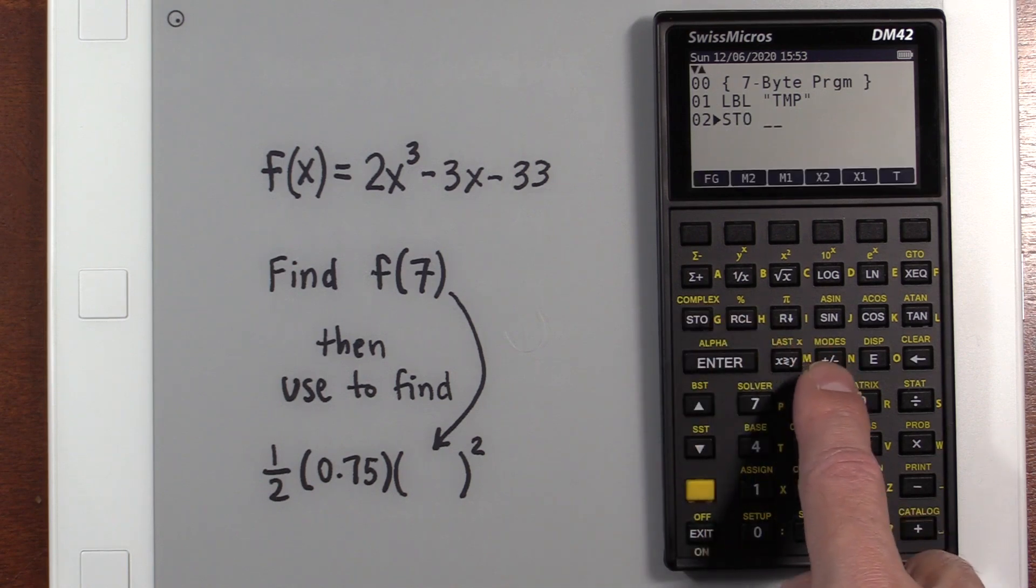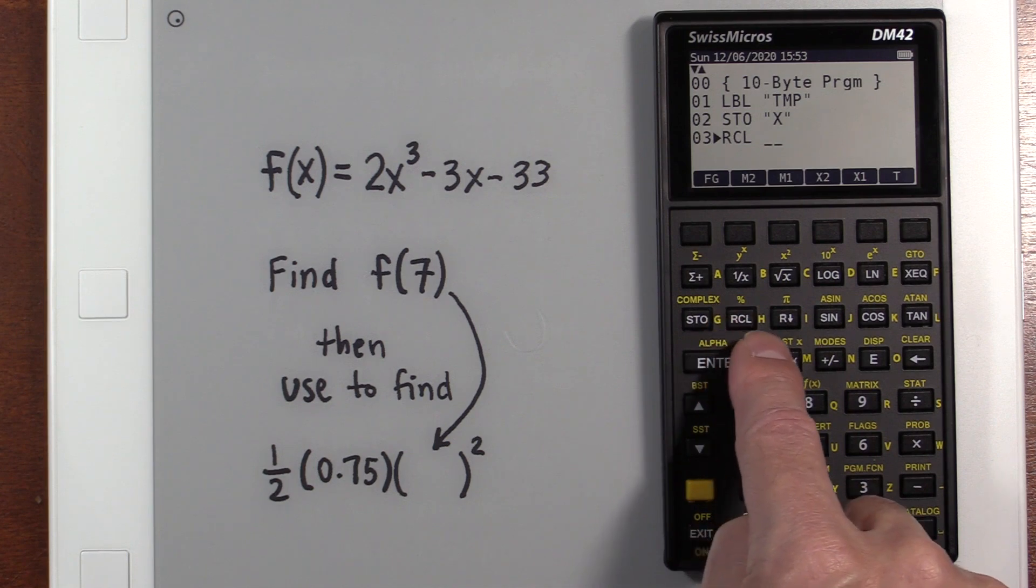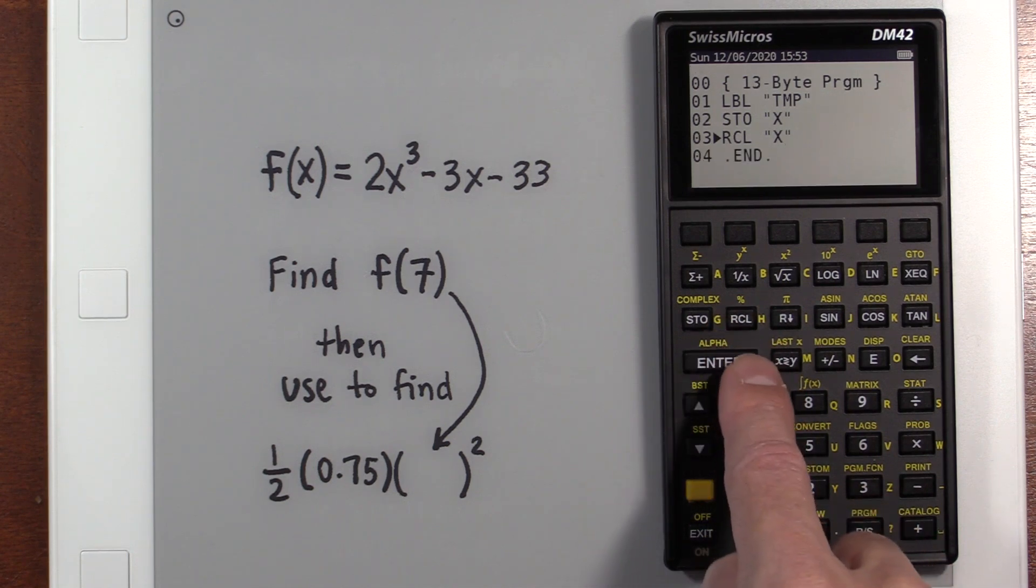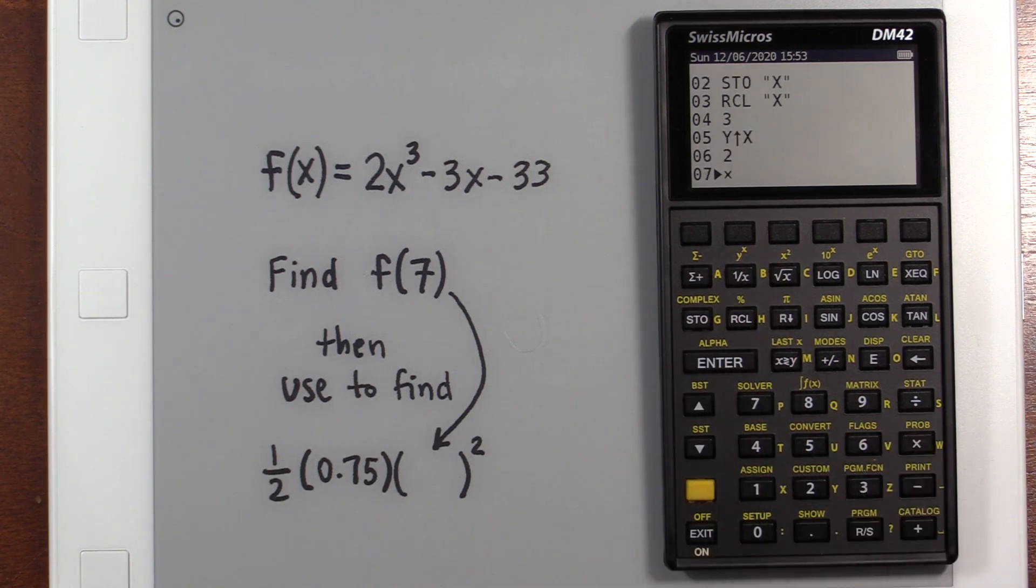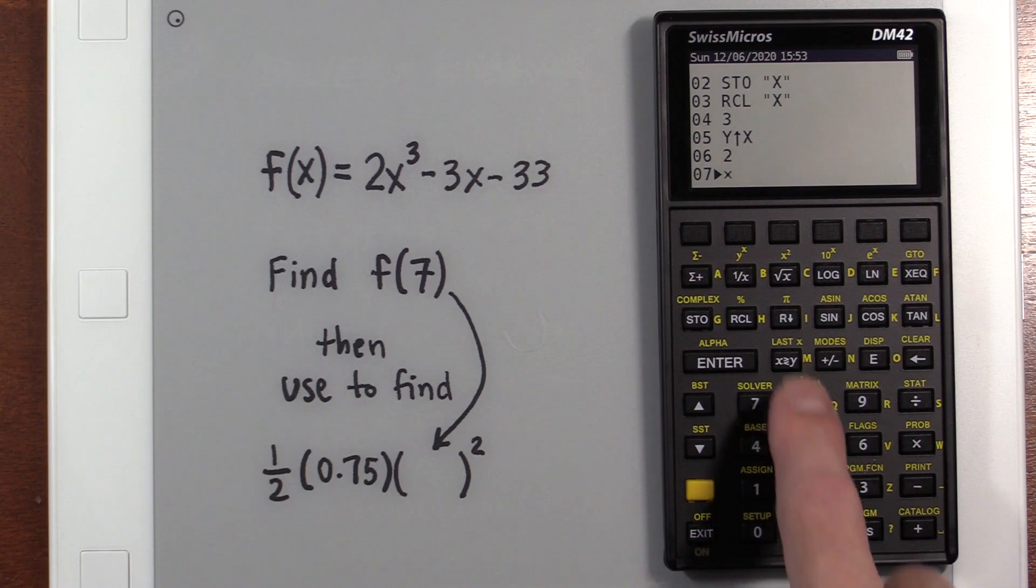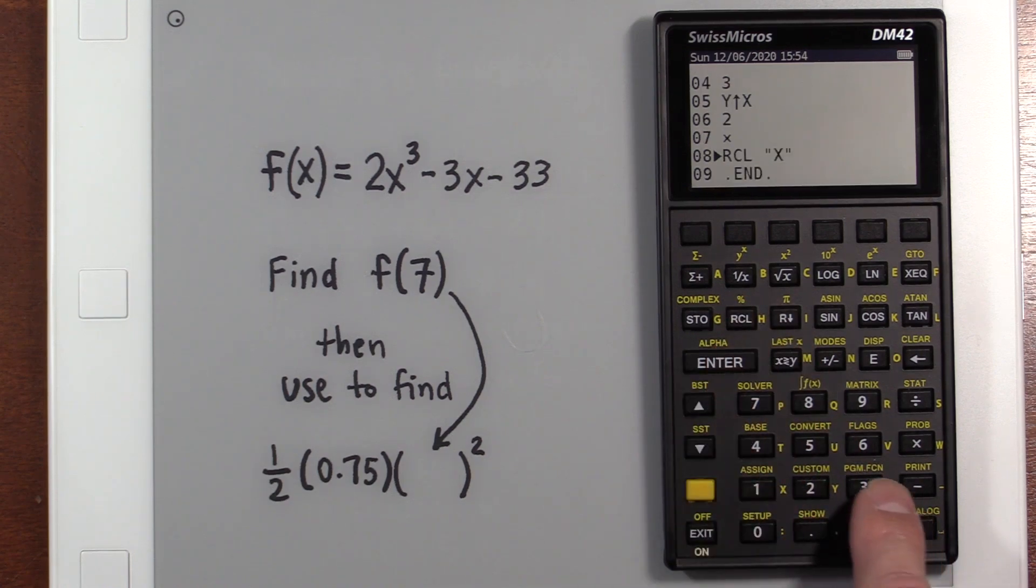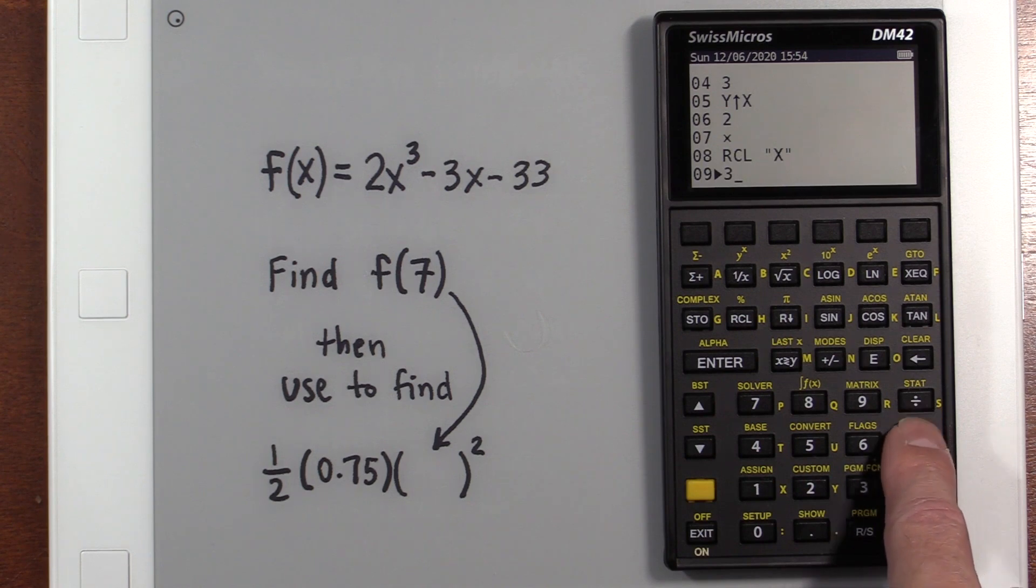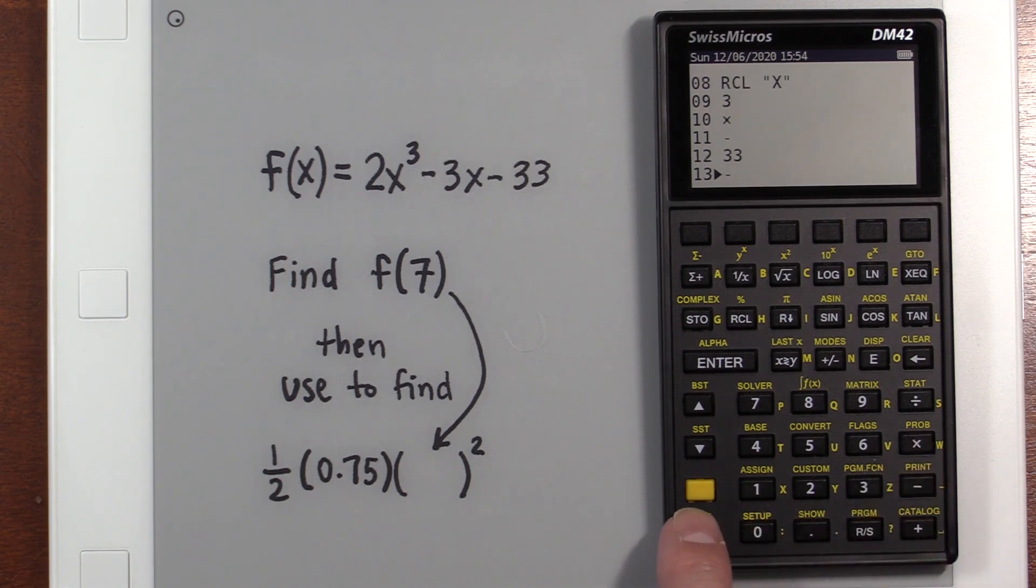And we need to take whatever's on the stack. And we're going to store it into X right off the bat. We're then going to recall that X value. We're going to cube it. So we put a three on the stack and we cube it. We're going to multiply it by two. We're going to then get another X. Put it on the stack. Multiply by three. Subtract that. And then we're going to take a 33 on the stack and subtract the bat. We can now exit.